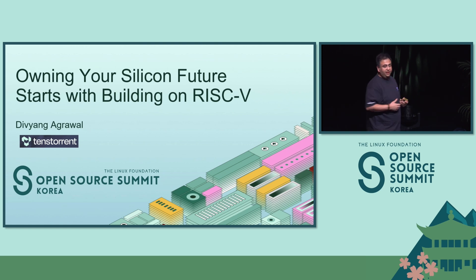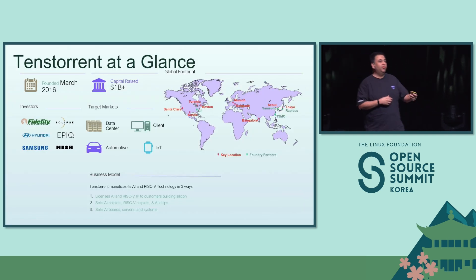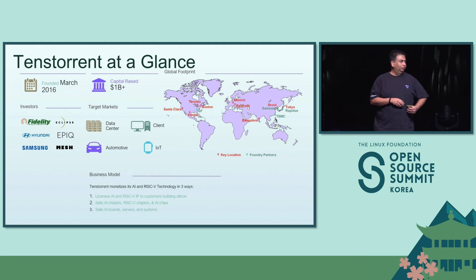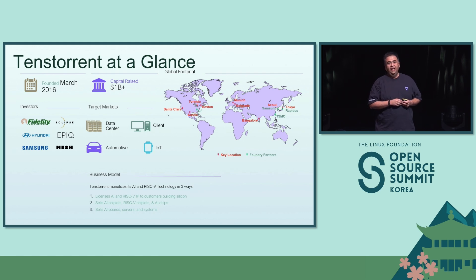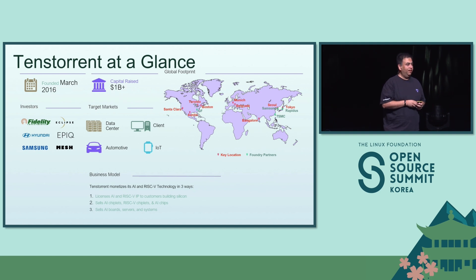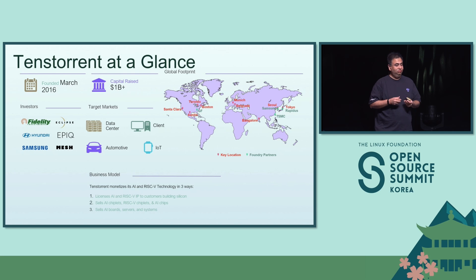RISC-V is an open standard. We are an investor-funded company, about 1,000 people. We have some great investors, a couple of them right here in Korea. We are headquartered in Santa Clara in California, and we are doing AI using RISC-V.